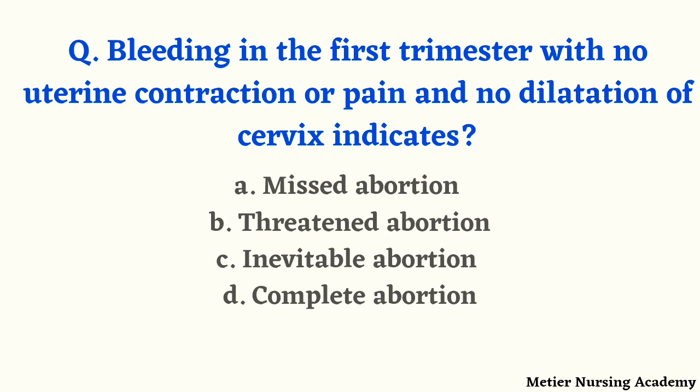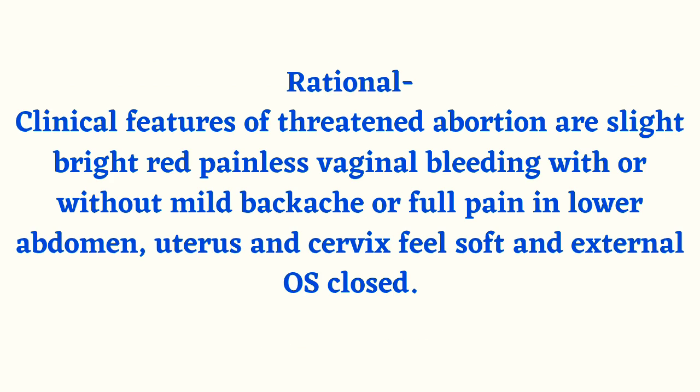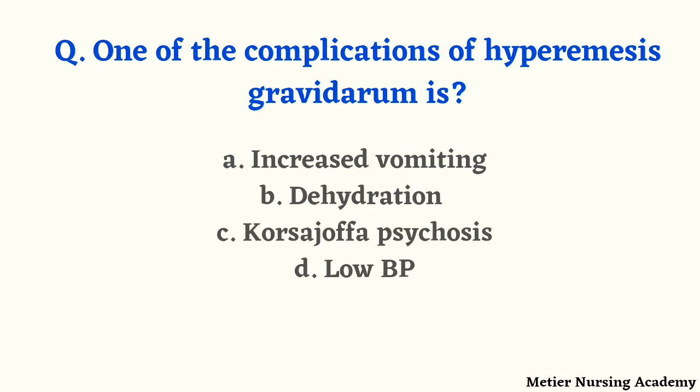Bleeding in the first trimester with no uterine contraction or pain and no dilatation of the cervix indicates — missed abortion, threatened abortion, inevitable abortion, or complete abortion? The right answer is option B, threatened abortion. Clinical features of threatened abortion are slight bright red, painless vaginal bleeding with or without mild backache or dull pain in the lower abdomen; the uterus and cervix feel soft and the external os is closed.